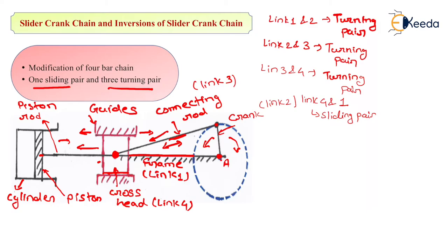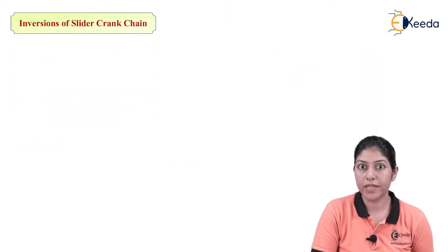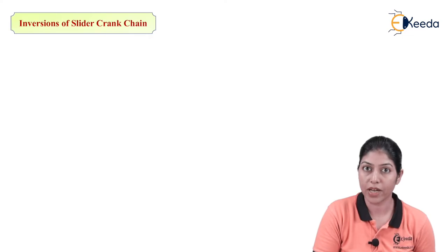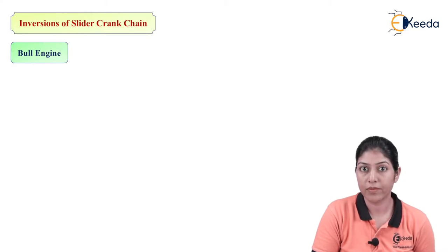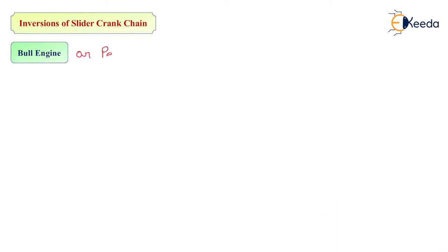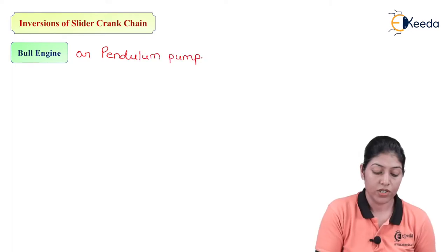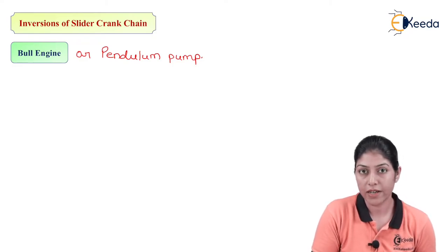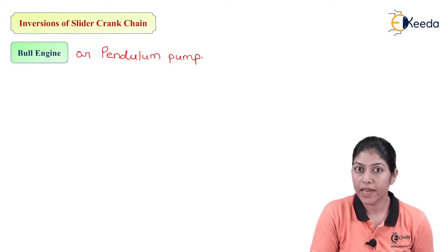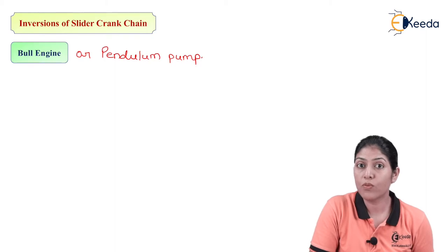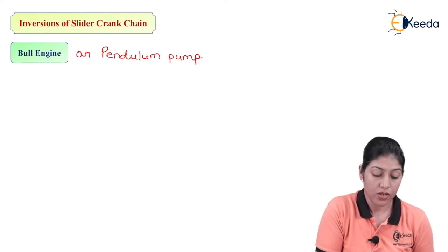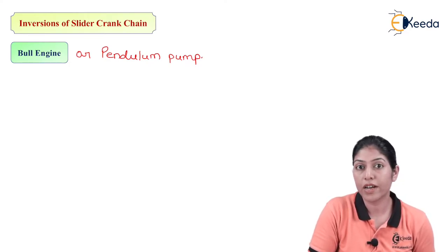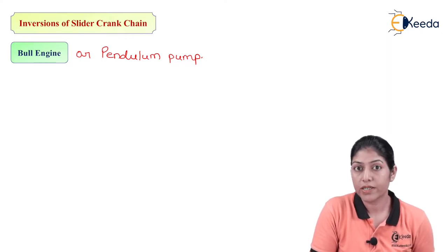Now let's discuss different inversions of slider crank mechanism. The first type of inversion is the bull engine. The bull engine is also called a pendulum pump and is an inversion of the slider crank chain. If we fix one link, it converts into a mechanism; but if more than one link is fixed, that is considered an inversion. So the bull engine is an inversion of slider crank chain mechanism where more than two links are fixed.